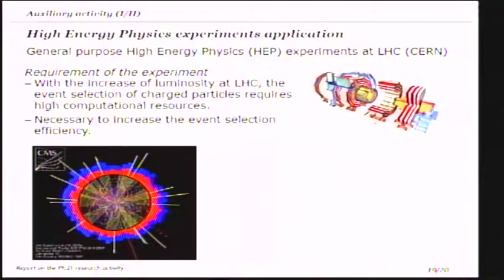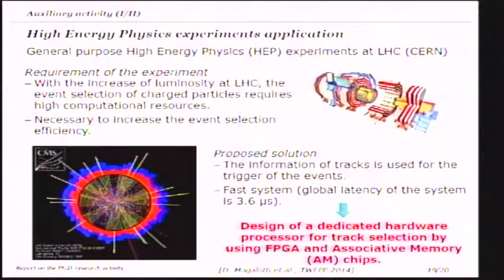Now some words about the current activity, which is based on the design of a dedicated track processor for high energy physics at CERN. At CERN there is the Large Hadron Collider (LHC), and the problem is to increase event selection after two particles collide in the accelerator. In order to increase event selection, we want to use the information of the tracks, which requires a very fast system with a global latency of about 3.6 microseconds. This track processor consists of a combination of two technologies: the associative memory chip, which is a custom chip, and a modern programmable device — the FPGA.